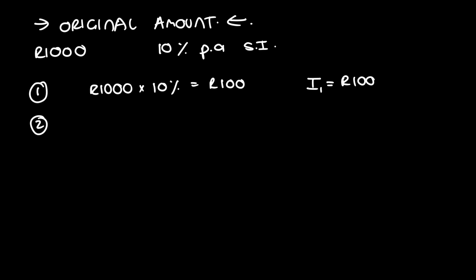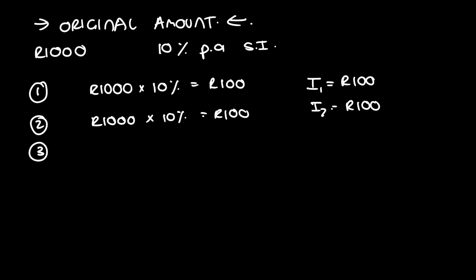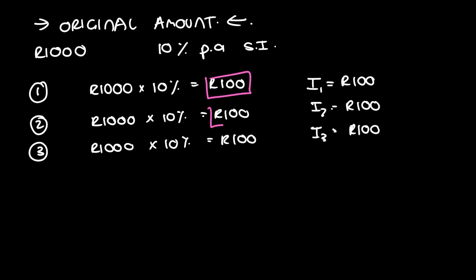The next year's interest doesn't take into account year one's interest — it's only on the original amount. So the next year's interest is a thousand rand times 10 percent, which equals a hundred rand. I2 equals a hundred rand. Again, the next year's interest doesn't account for accumulated interest — it's just on that thousand rand. So I3 equals a hundred. You should be seeing a pattern: the interest for every year is identical.